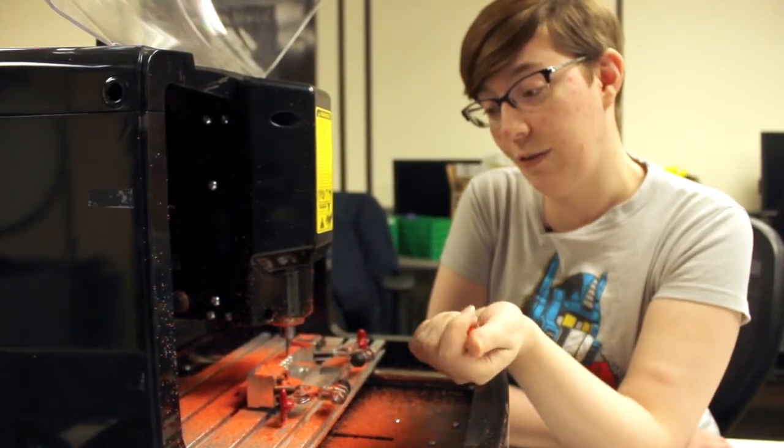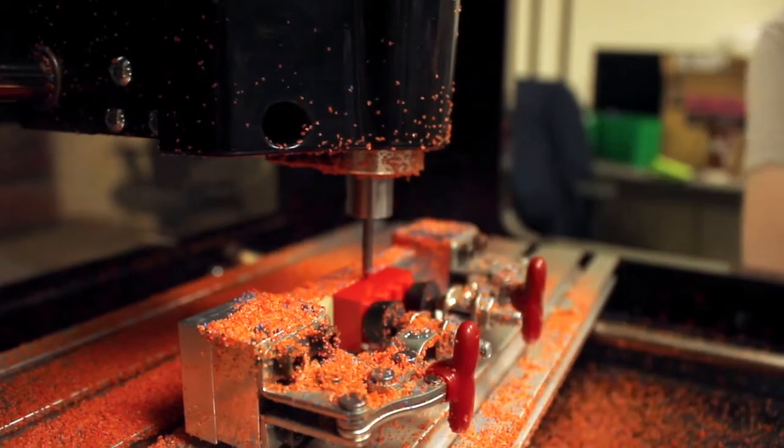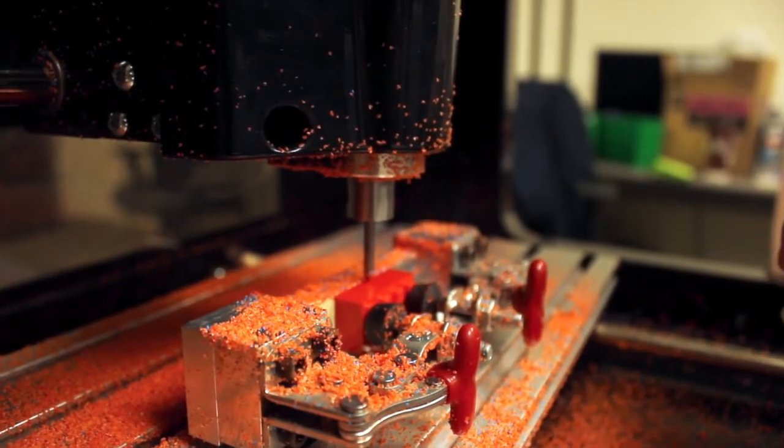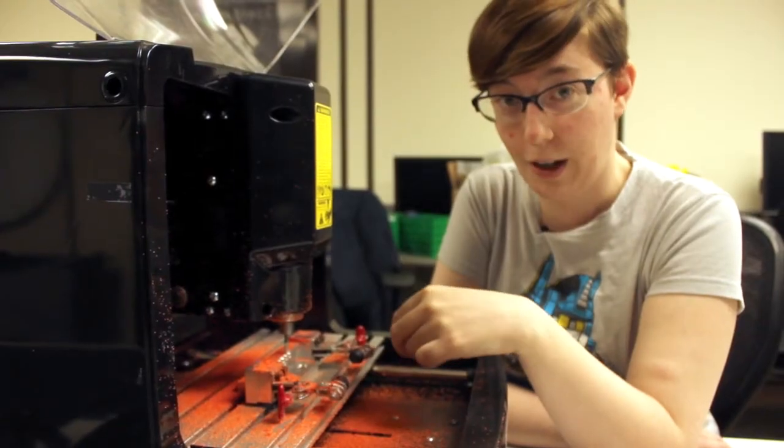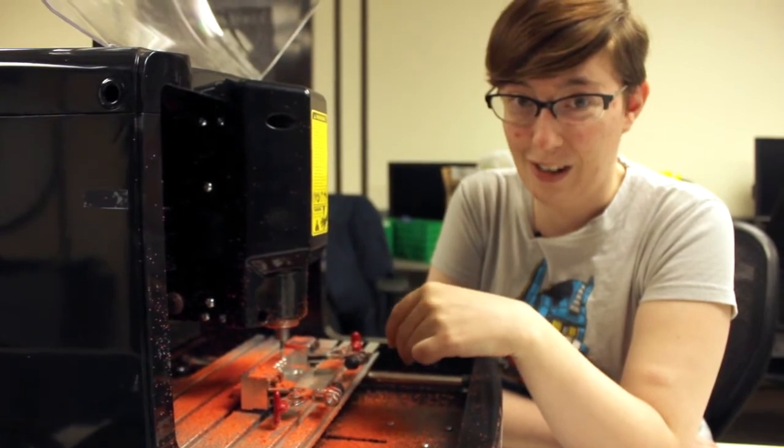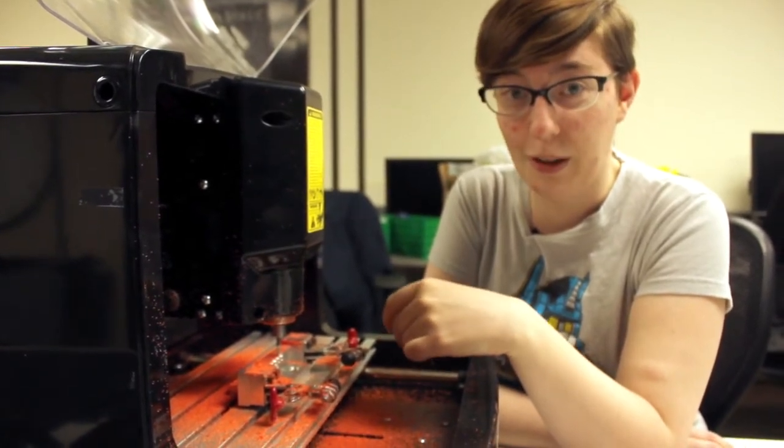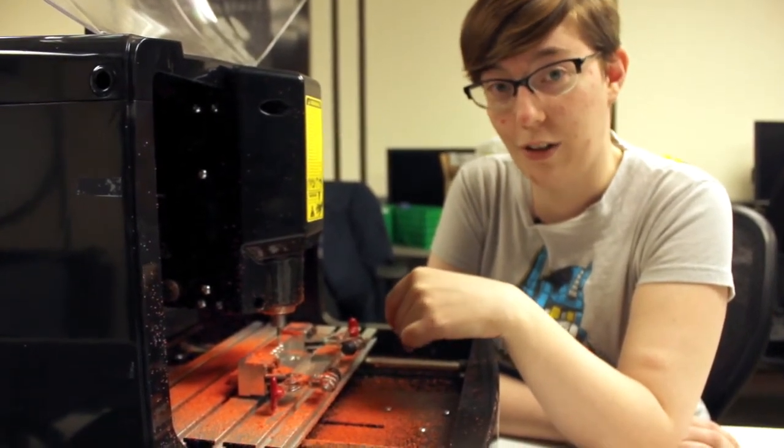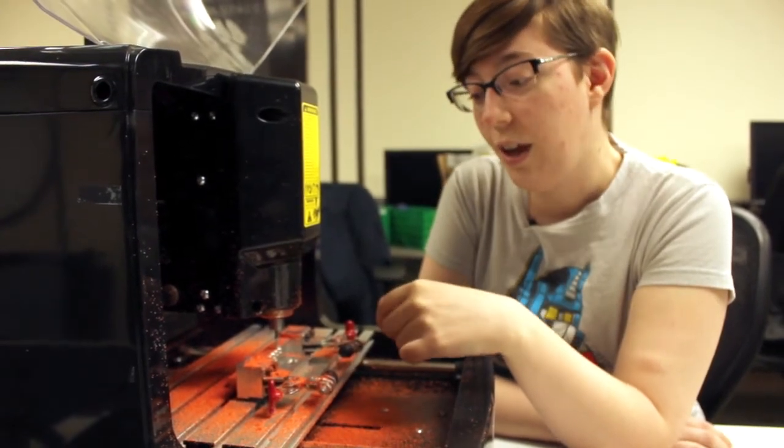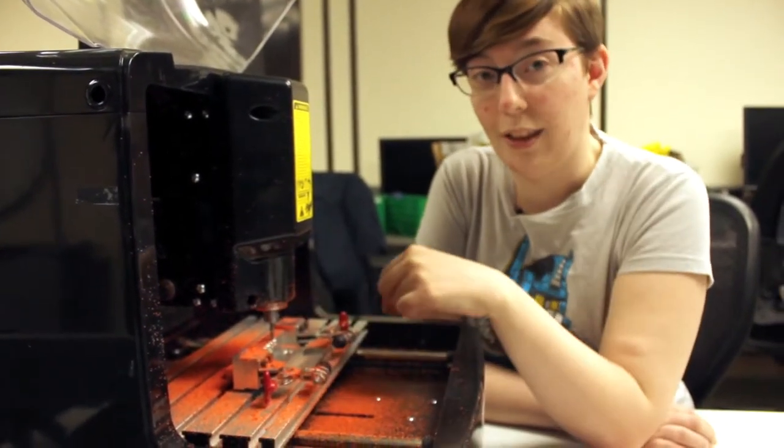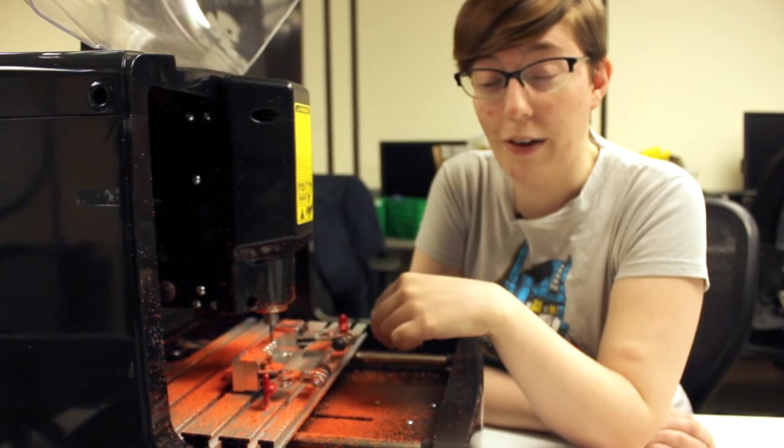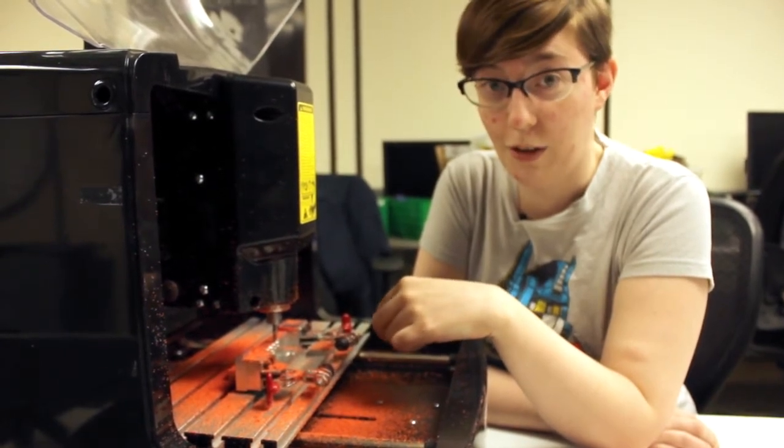The second thing that we've done is we've also made a custom collet for the machine. It came with a collet that took 4mm cutters. Those are really hard to find and not very common, and there wasn't enough availability in terms of the types of cutters I wanted to use. We've machined a new one that will take a 1/8 inch shank. Now I've got a wide variety of options in terms of cutting profiles.